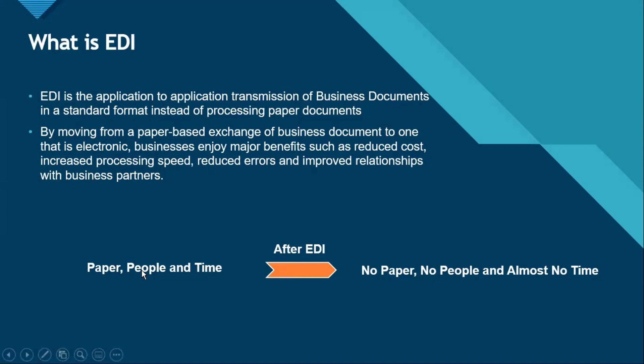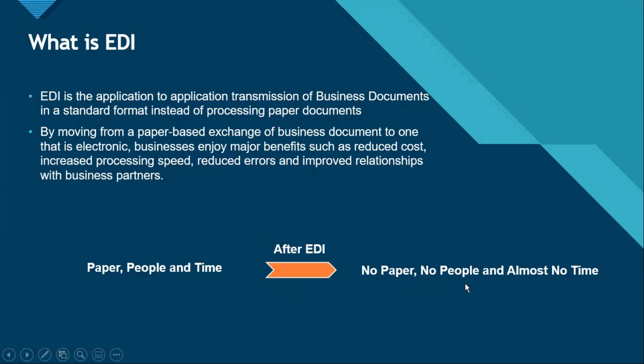Before EDI, back in the 1980s and 1970s, it was more of a manual effort — if you wanted to do business with your trading partners, you needed to use paper-based purchase orders or invoices, which involved more people and definitely more time. When people intervention is there, you tend to have more errors, the processing speed is slow, and the cost is more. When EDI came into picture in the early 1990s, it helped to overall reduce cost, fewer people were needed, and it was almost near real-time to transact business documents. After EDI: no paper, no people, and almost no time.